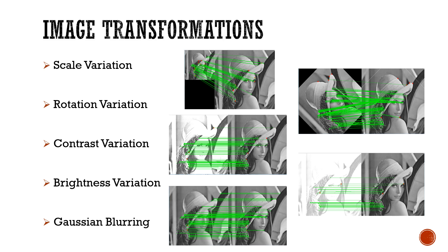The image transformations used for our analysis include scale variations, rotation variation, contrast variation, brightness variation, and Gaussian blurring. We have performed the transformations using the methods described in the next slide.